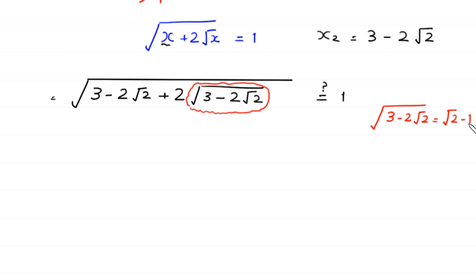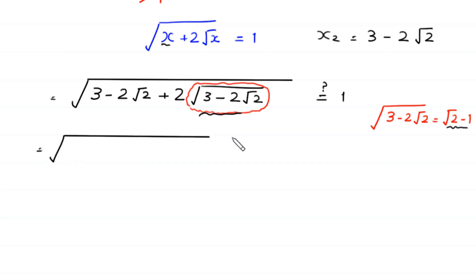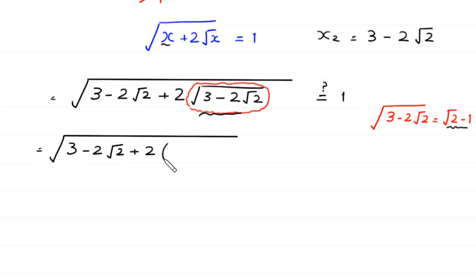We replace square root of (3 minus 2√2) with (√2 minus 1) in the expression.